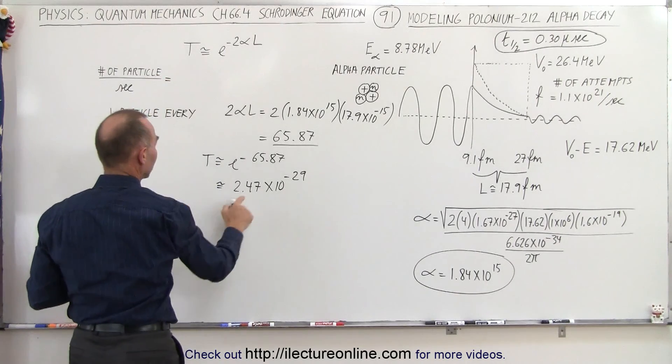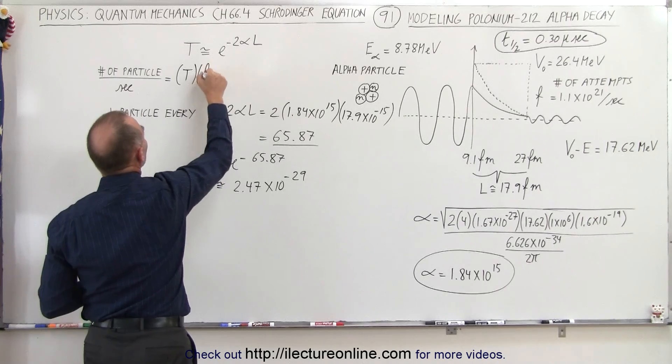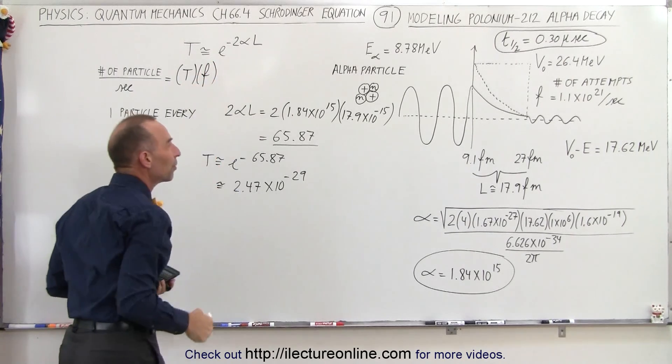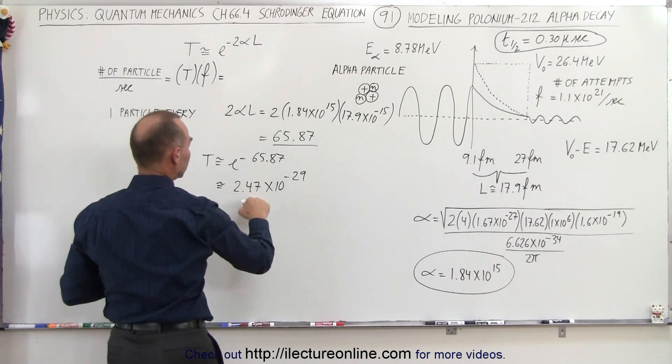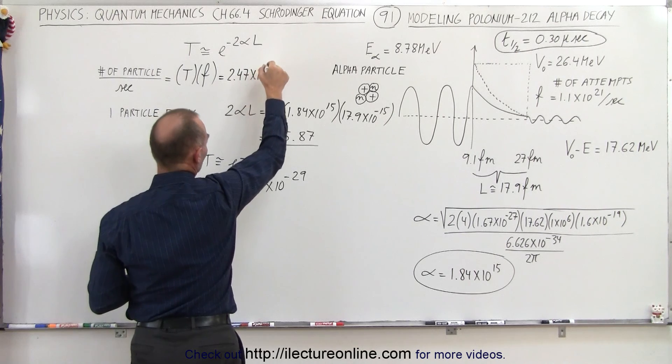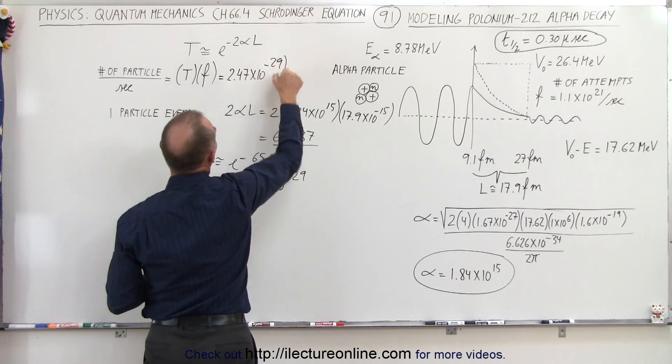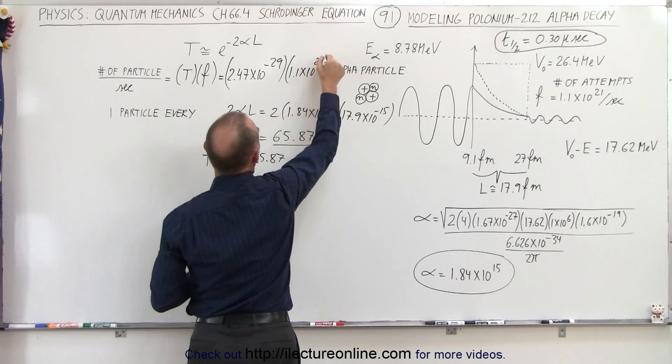So the number of particles per second is going to be equal to T multiplied times the frequency—the probability times the number of times it tries. So when we do that we have to multiply...